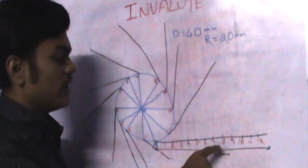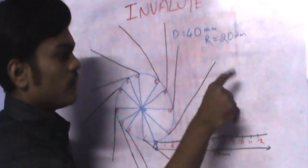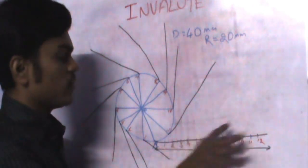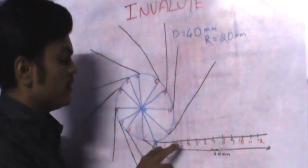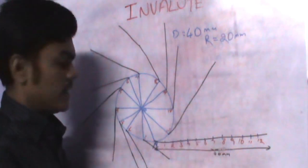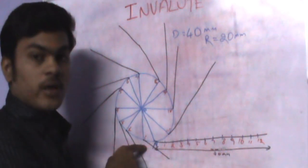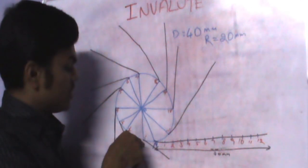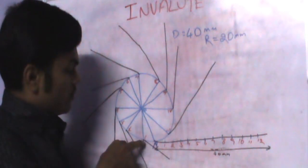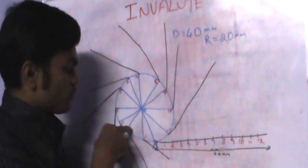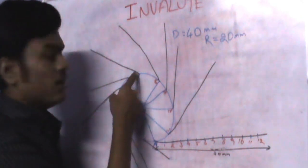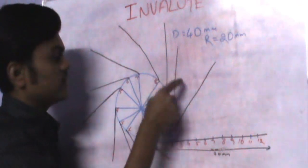To divide the tangent line into 12 equal parts: the total length is 40 mm, so 40 divided by 12 gives the equal spacing. You can mark the divisions with your compass. Then from each division point on the circle (1 dash, 2 dash, 3 dash, and so on), draw a tangent to the circle. This is the way it looks.